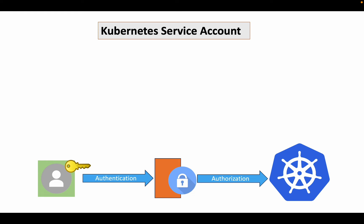Just like a user, an application or pod running inside the Kubernetes cluster also needs to access Kubernetes or outside resources. The application or pod goes through a similar process — the API server will check authentication first and then authorize it. But how does the application or pod get the credentials? That's where the service account comes into the picture.